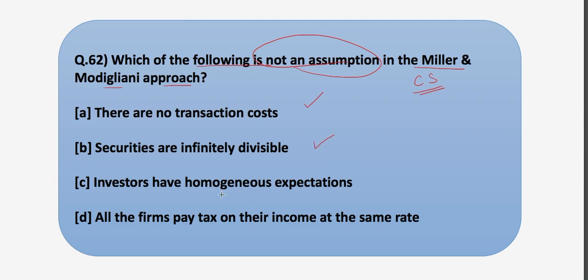Now let's look at the options. There are no transaction costs—this is correct. Securities are infinitely divisible—this is also correct. Investors have homogeneous expectations—as I have told you that the markets are perfect, complete information is available. By perfect market, it implies that the investors have homogeneous expectations. The fourth is that all the firms pay taxes on their income at the same rate. This is not the correct one, and therefore our answer is option D.